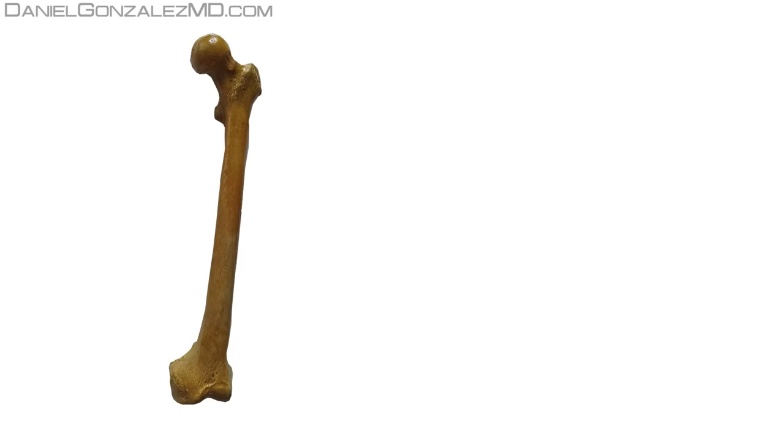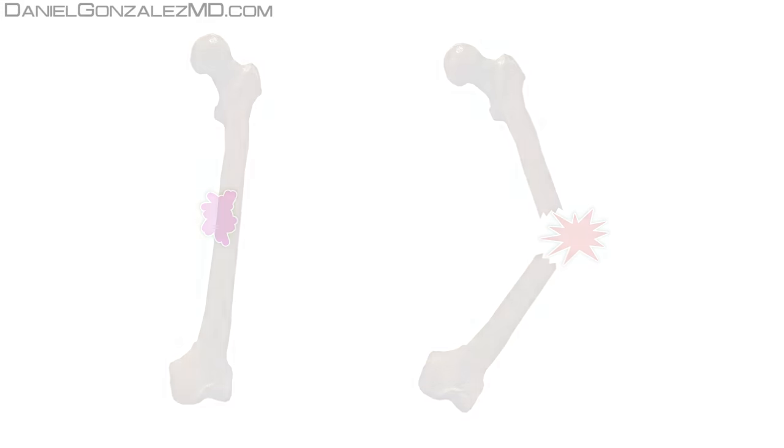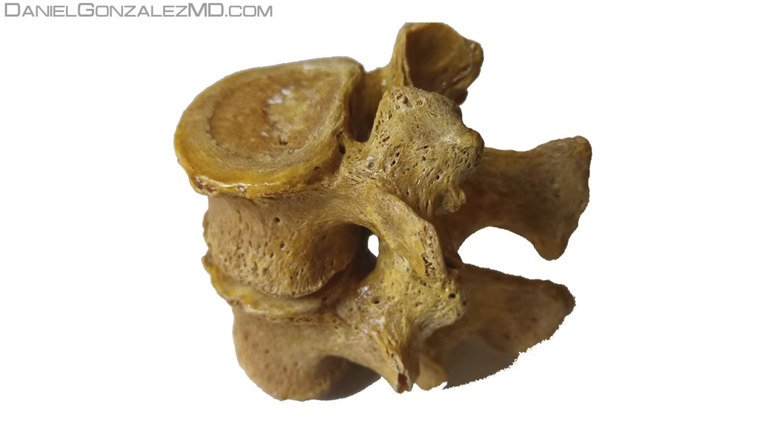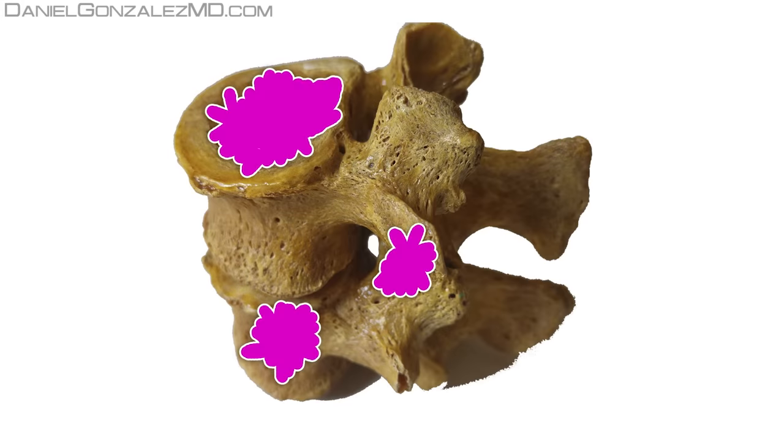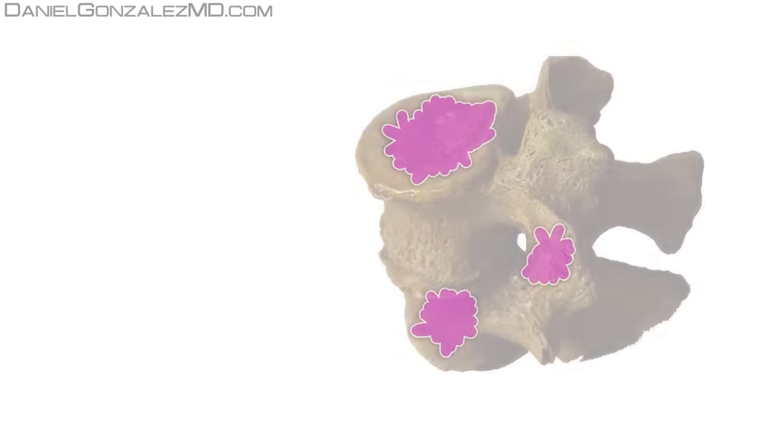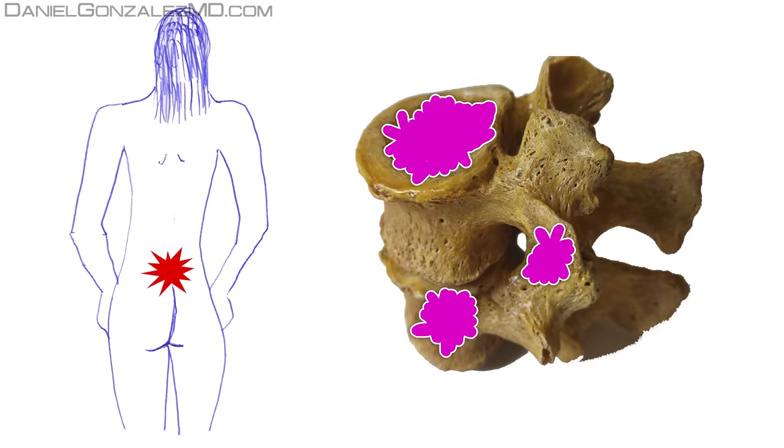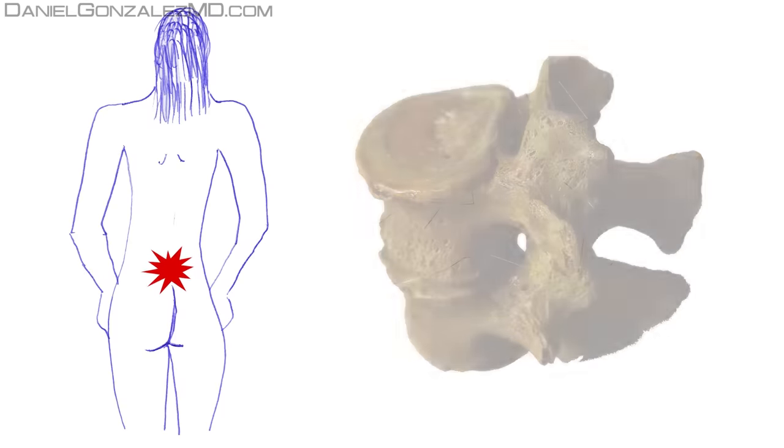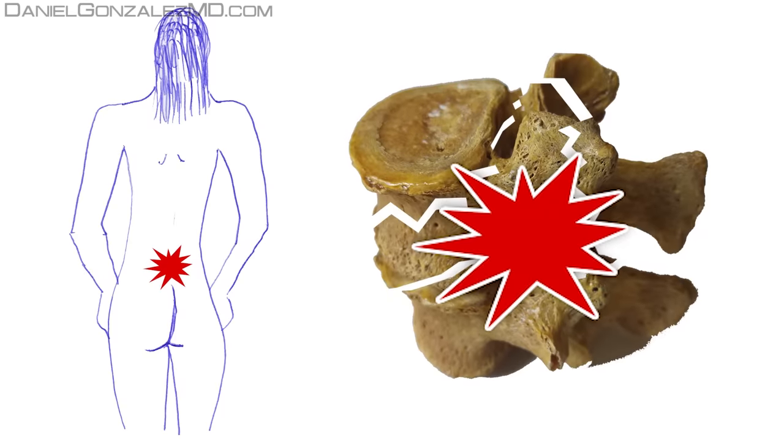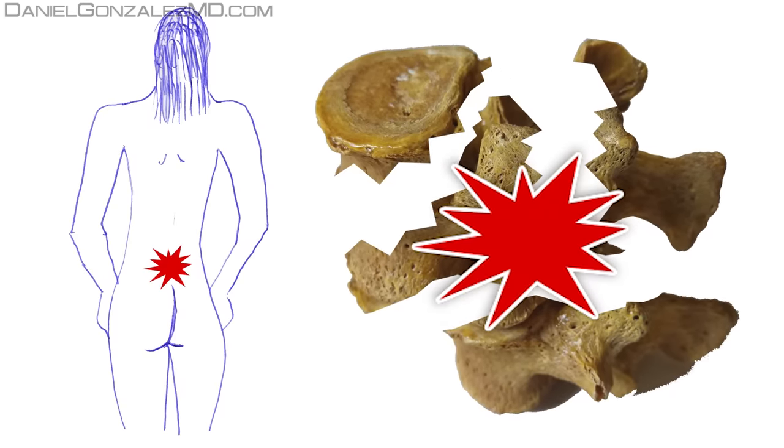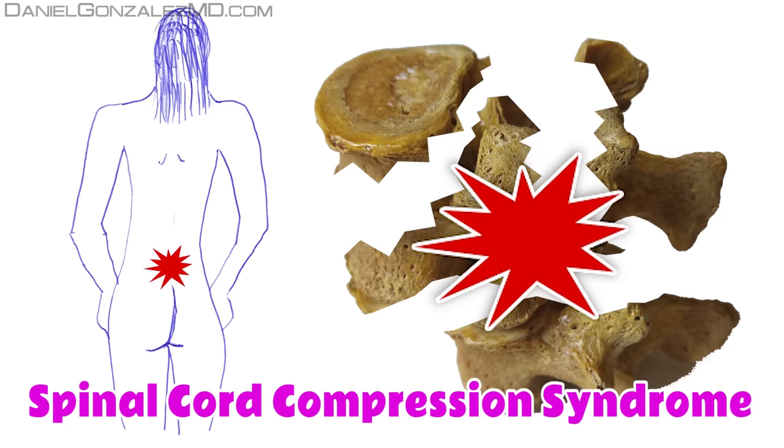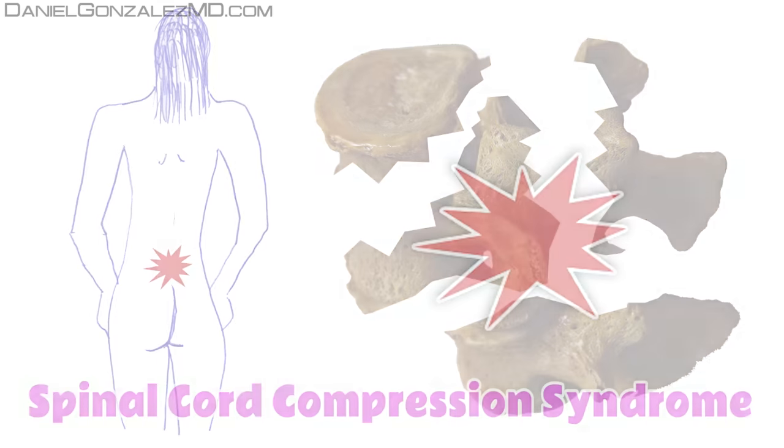This growth compromises bone strength, and especially if bone has to bear weight, it may break. A special case of bone metastasis occurs when they affect vertebrae. It may appear back pain, and even when vertebrae breaks, it can cause neurological symptoms that fall into the spinal cord compression syndrome, which is an oncologic emergency.